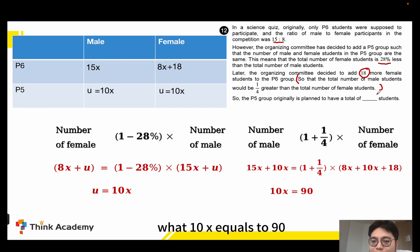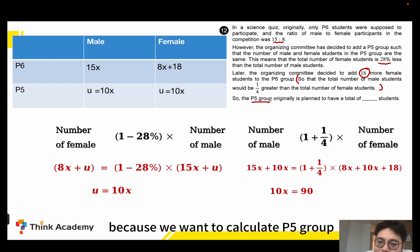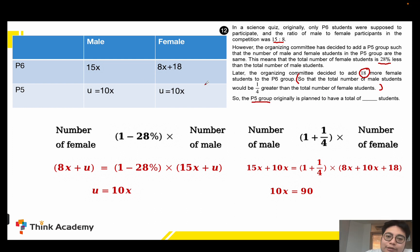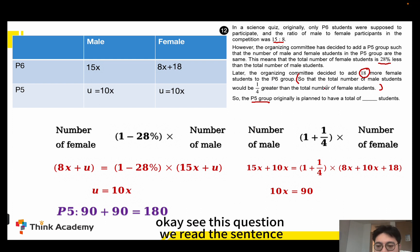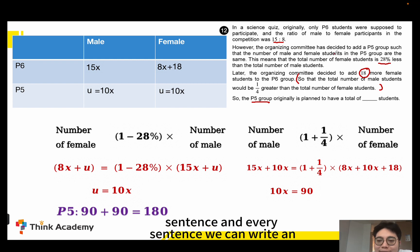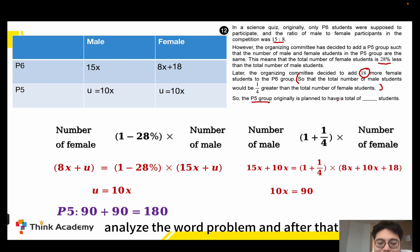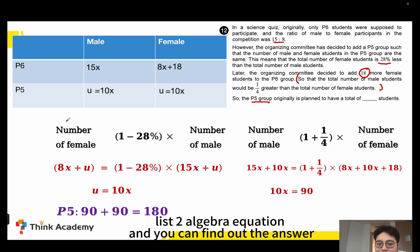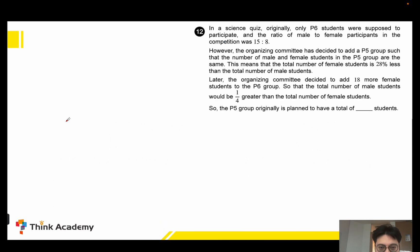After solving this equation, we get 10x equals 90. Note that we don't need to find x — just stop at 10x equals 90, because we want to calculate the P5 group. Originally, P5 is planned to have 10x male plus 10x female, which is 180 students. Read the sentence one by one, write a formula each time, use a table to help analyze, and list the two algebra equations to find the answer.